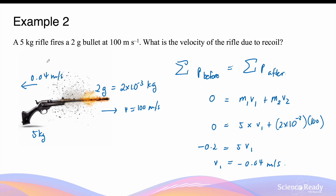You can see that the speed of the gun due to the recoil is much slower than the bullet speed. This is because the mass of the gun is much heavier than the mass of the bullet — 5 kilograms compared to just 2 grams. This concludes the video on momentum.